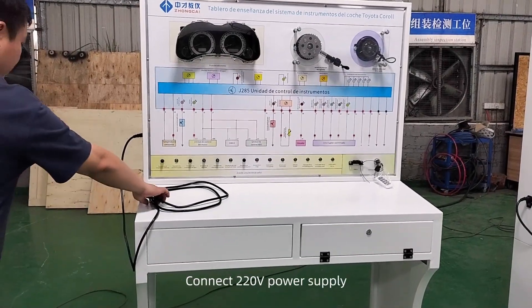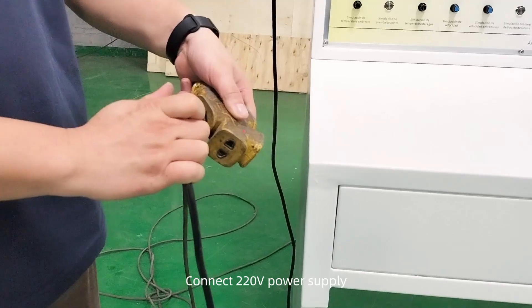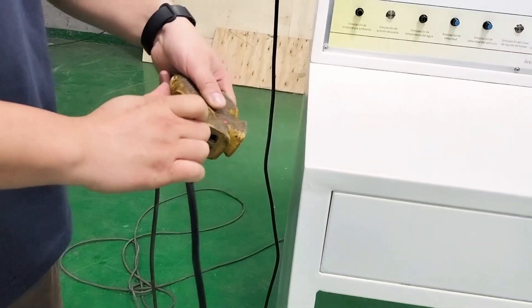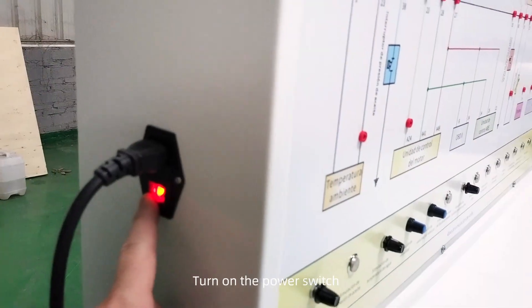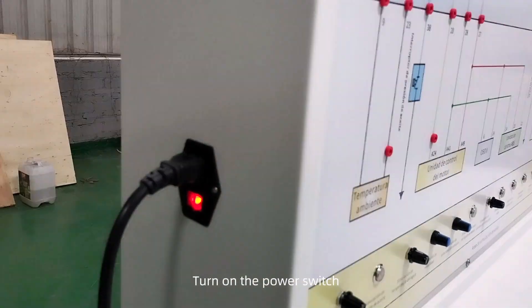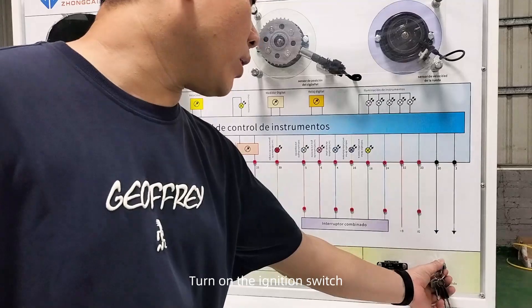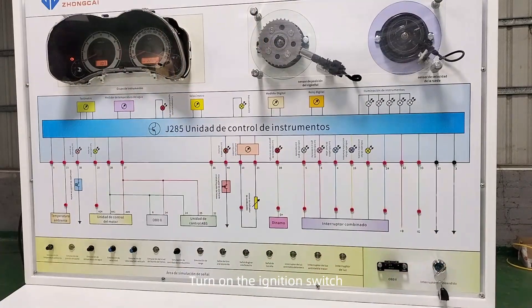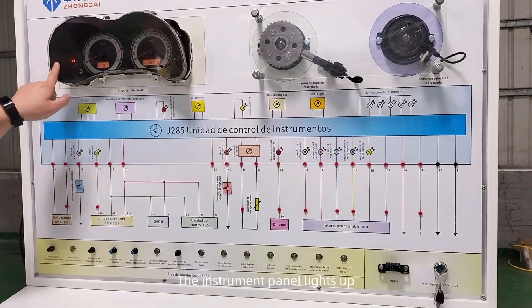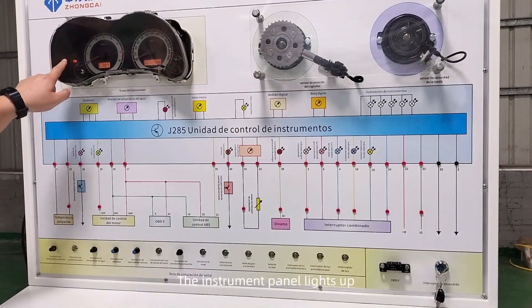Connect to 120V power supply. Turn on the power switch, then turn on the ignition switch. The instrument panel lights up.